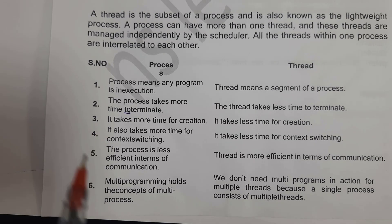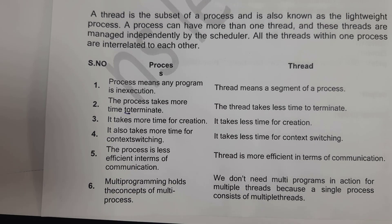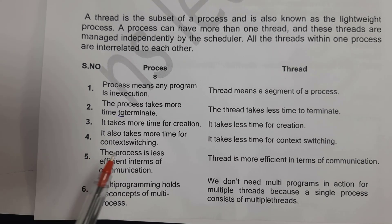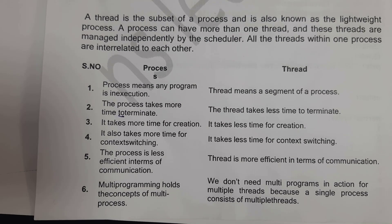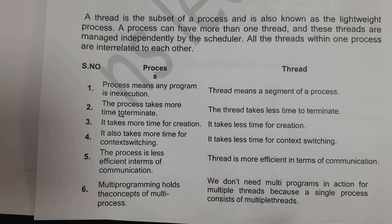Process takes more time for creation, whereas a thread takes less time for creation. Process takes more time for context switching — context switching means if you want to change from one task to another task, it will take more time. Whereas in a thread, it will take less time for context switching.